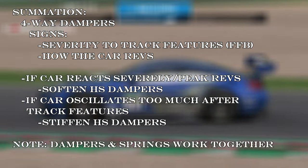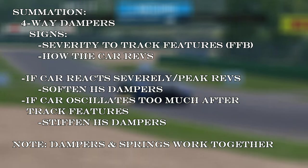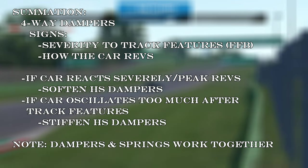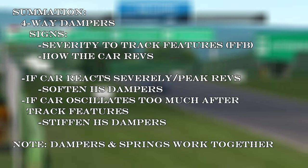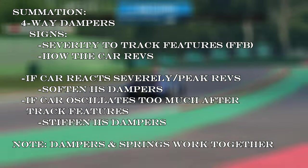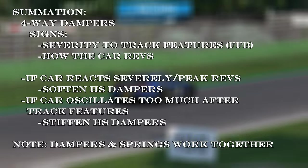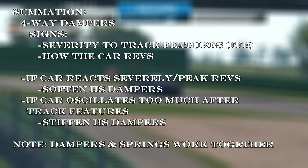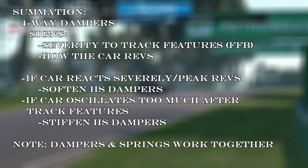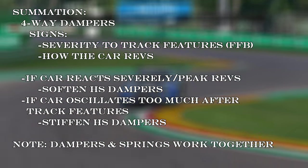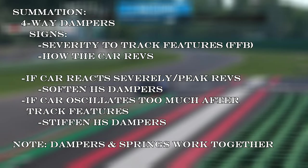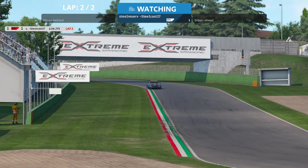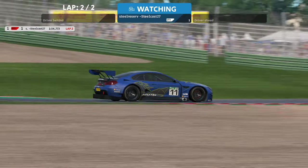For four-way damping systems, the signs to look for when going over track features are the severity of how the car reacts — both through its response over the feature itself and through your force feedback — and then how and when the car is revving. If the car is reacting severely and you are hearing peak revs over track features, try softening the high-speed dampers. If the car is reacting less severely over features but the revs oscillate too much after, and you're trying to put the power down, try stiffening the high-speed dampers. A final note: dampers and springs work together, so if you're making damper changes and can't quite get the feel you want, you may have to try different spring settings and start over. Changes like this might amount to a mere tenth per lap — over ten laps that's a second.